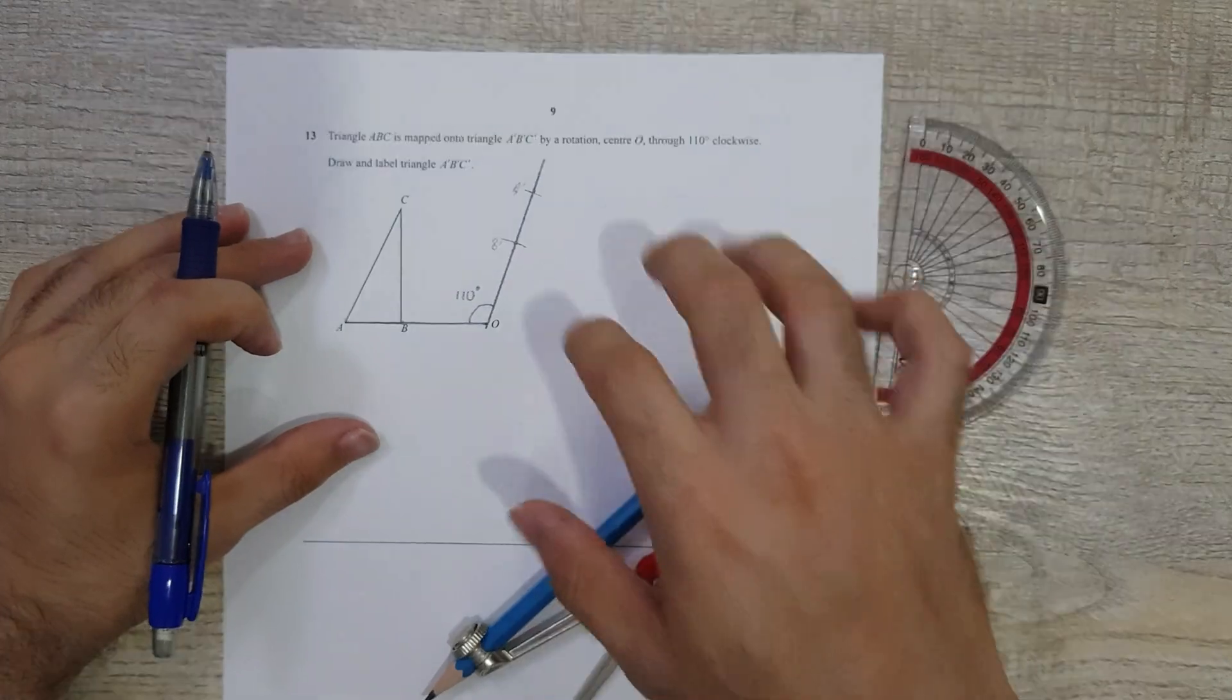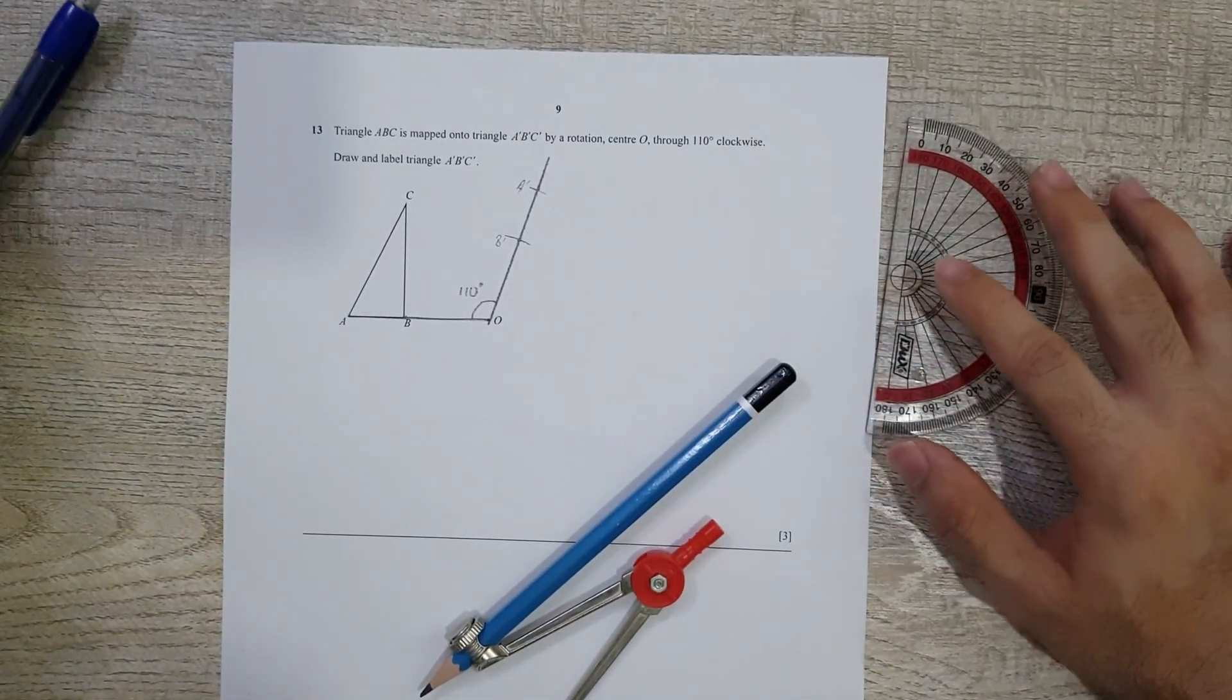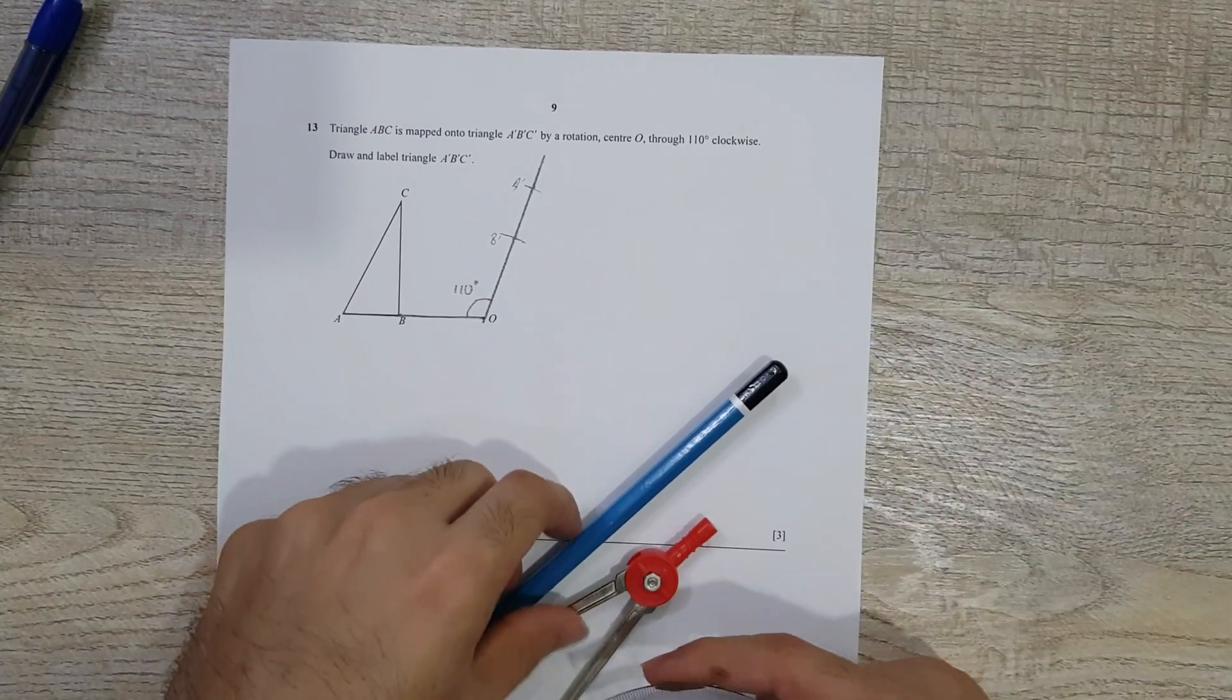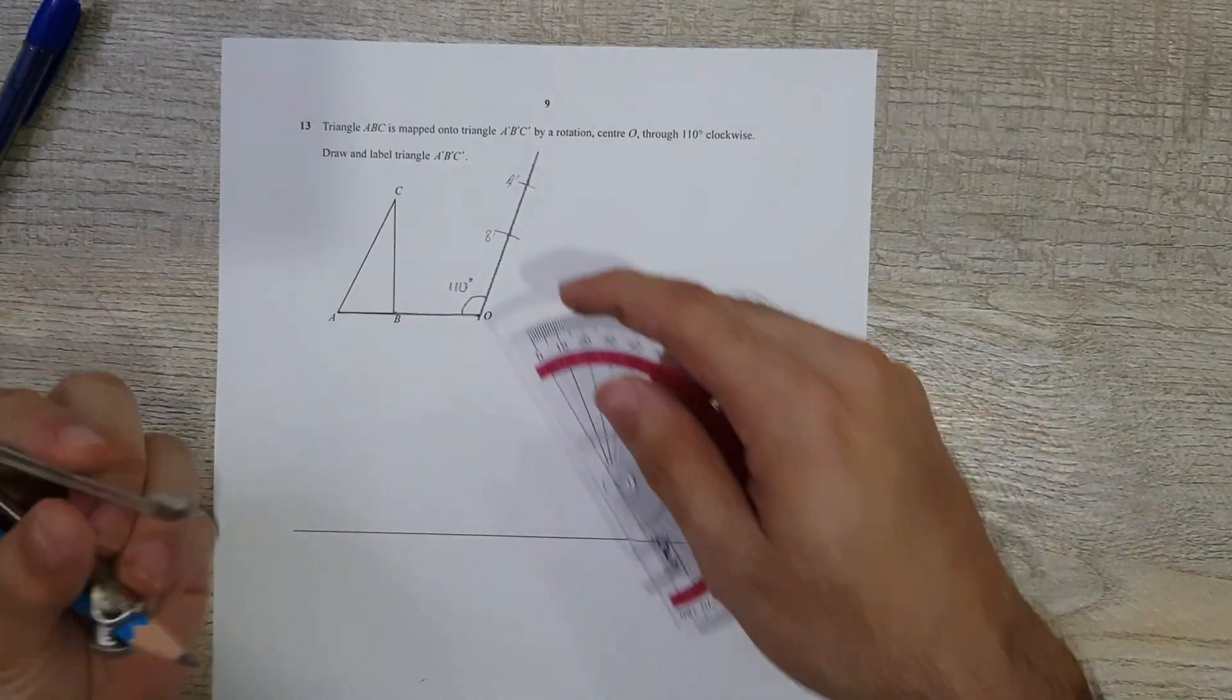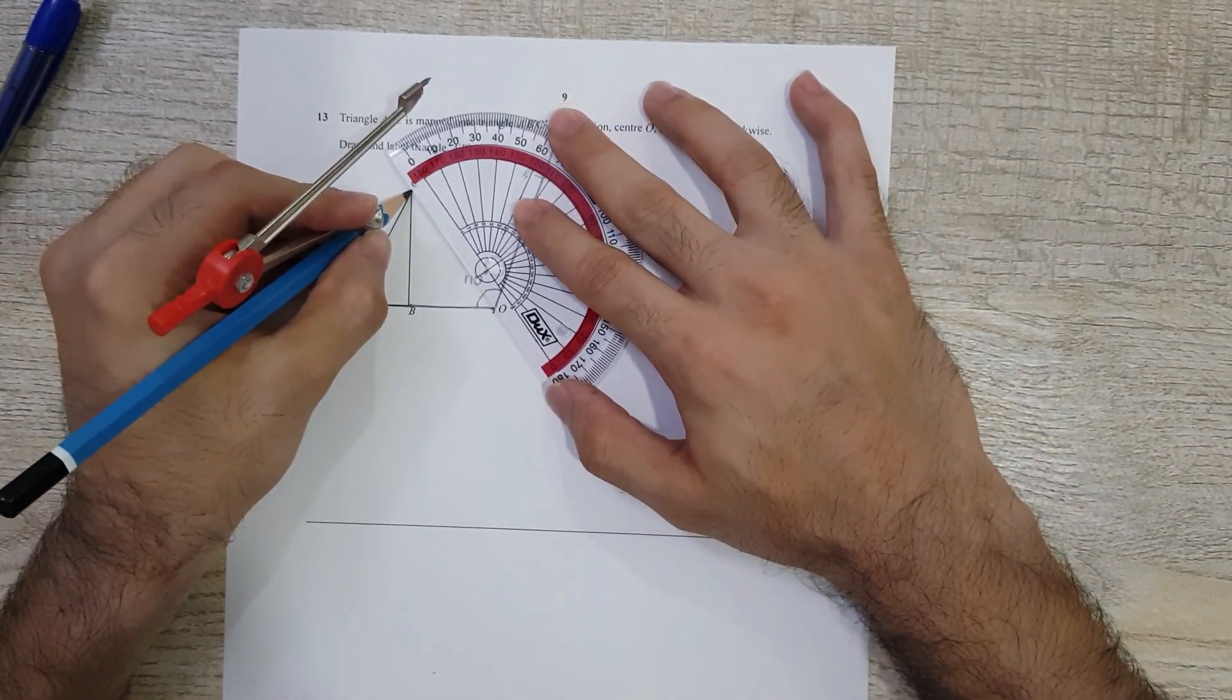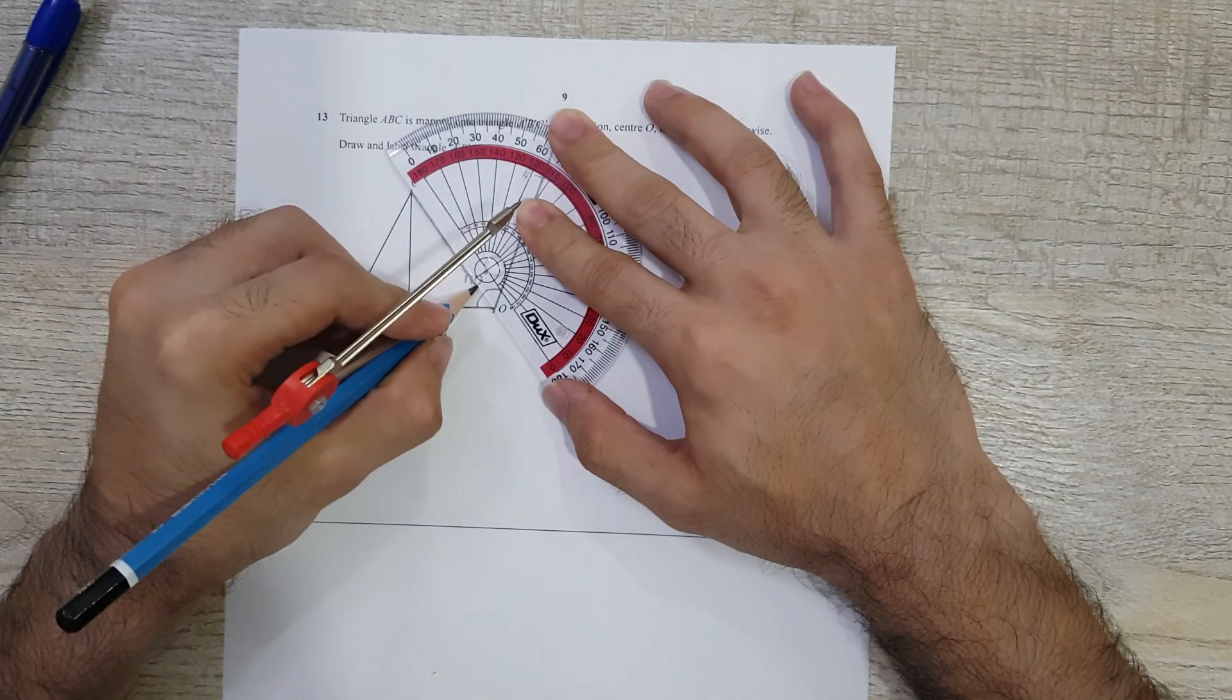When I was explaining this, a student came up with a very interesting idea. First I'll tell you how I did this, and then I'll tell you what the idea my student came up with. Basically what I did was I did it the same way I rotated point A and B.